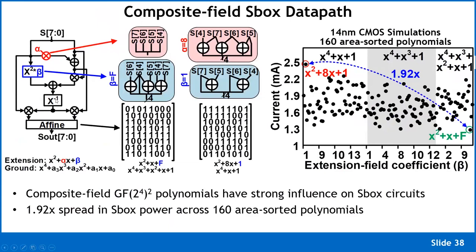Based on the polynomial used, the circuit realization changes significantly. There are 2,880 valid polynomial choices — historically everyone used one polynomial from a classic math paper. We explored all 2,880 choices and found that circuit power consumption can vary by almost 2x depending on the polynomial, for the same input data.